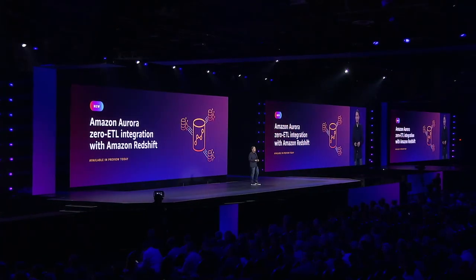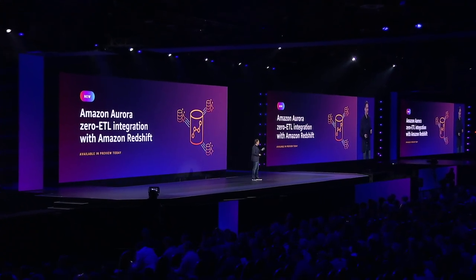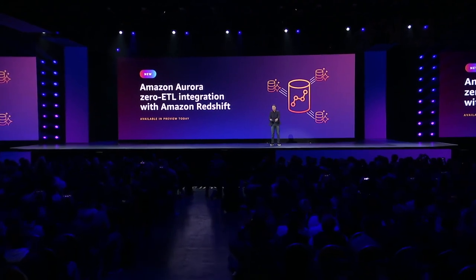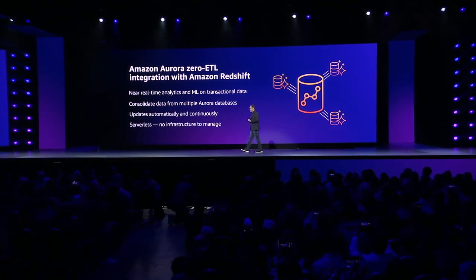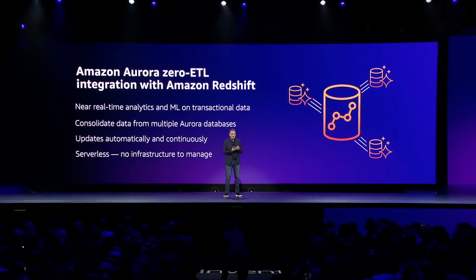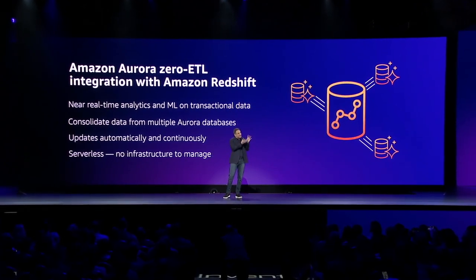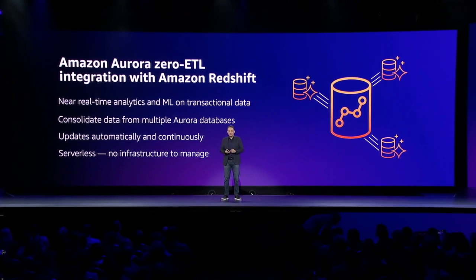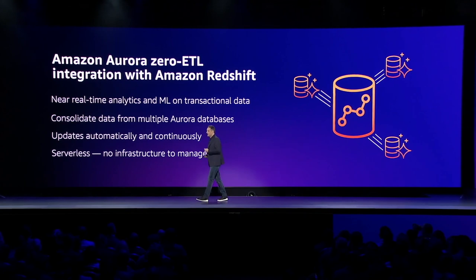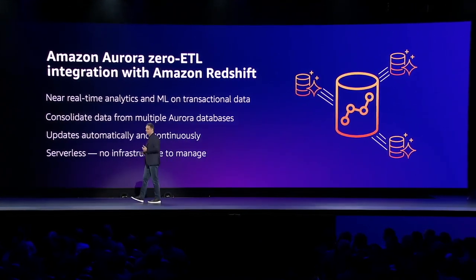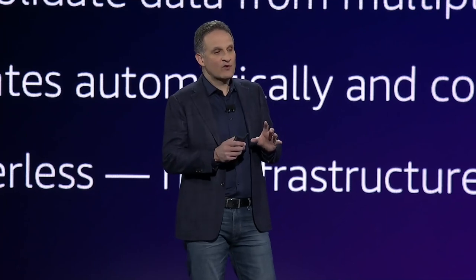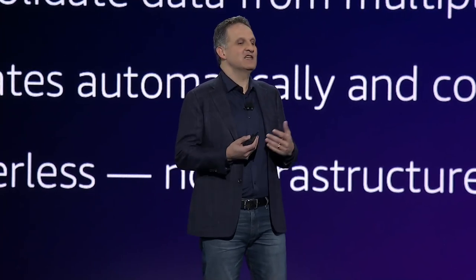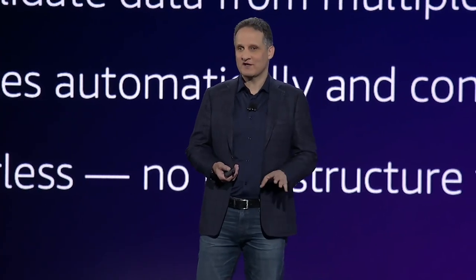Today I'm excited to announce the preview of a fully managed Zero ETL integration between Aurora and Redshift. This integration brings together transactional data with analytics capabilities, eliminating all the work of building and managing custom data pipelines. You just choose the Aurora tables containing the data you want — it appears within seconds in Redshift. Data from multiple Aurora databases can be replicated into the same Redshift instance, always consistent, with updates automatically and continuously propagated in near real time.